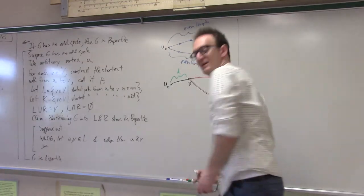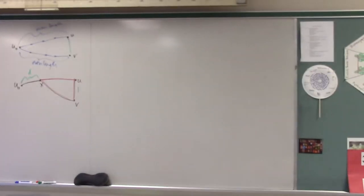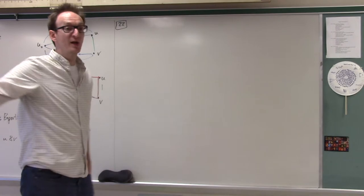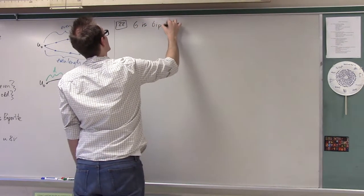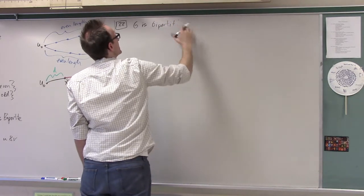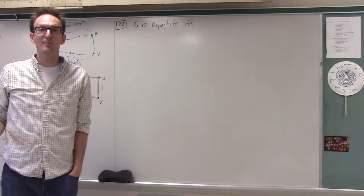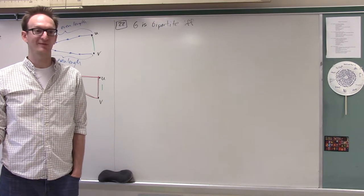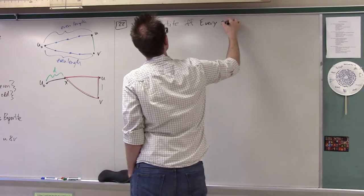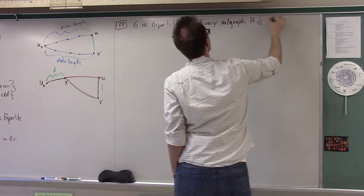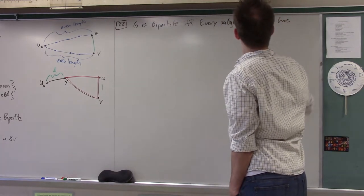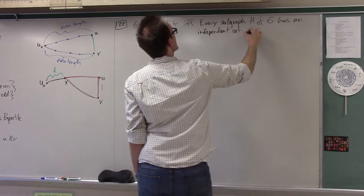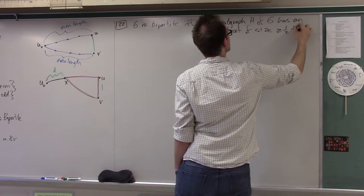All of this was deemed necessary to do the real thing I actually wanted to do, which was number 22 from the last homework. Number 22 said something like: prove that G is bipartite if and only if every subgraph H of G has an independent set of size at least half of the vertices of H.